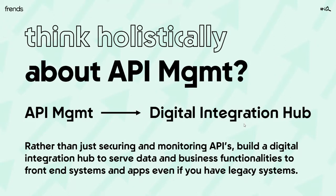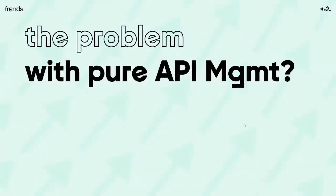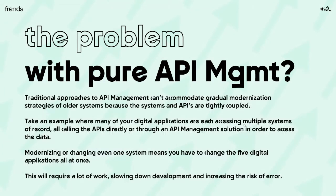Those integration capabilities are combined with a hyper-fast storage to actually serve data to the APIs we're building on top of our digital integration hub. That's the key concept. The reason we should care about this is that there are problems with just thinking about pure API management — perhaps the old-fashioned way of buying an API management platform and thinking it will solve all your API problems.